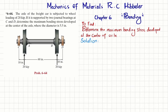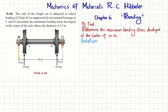Let's start with the solution. If you remove the journal bearing at C, there will be a reaction force RC acting downward, because the two wheel loads are upward. Similarly, if you remove the bearing at point D, you will have a reaction force RD. We will find RC and RD using equations of equilibrium.